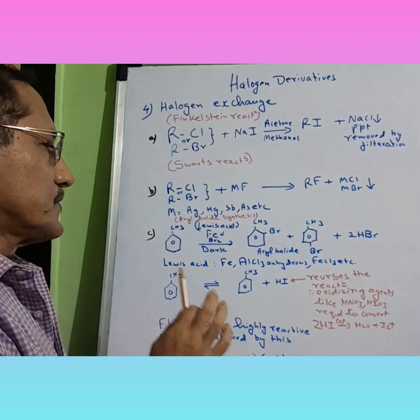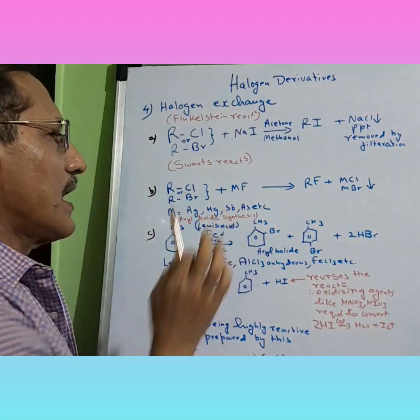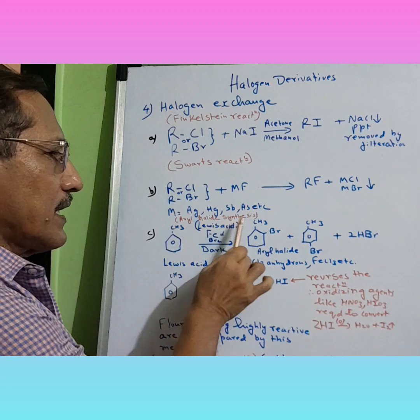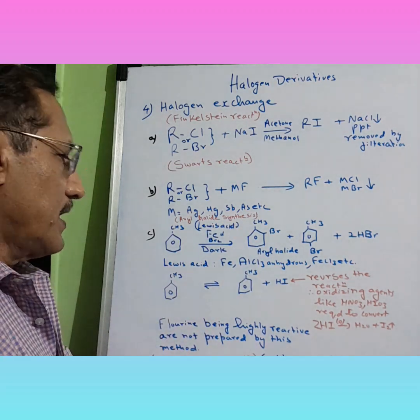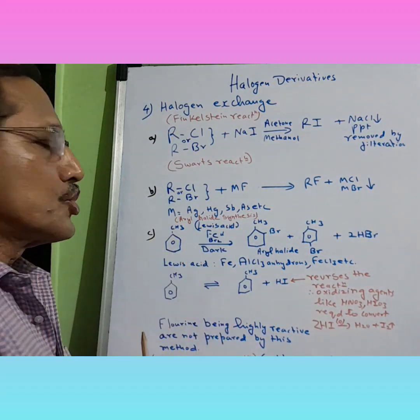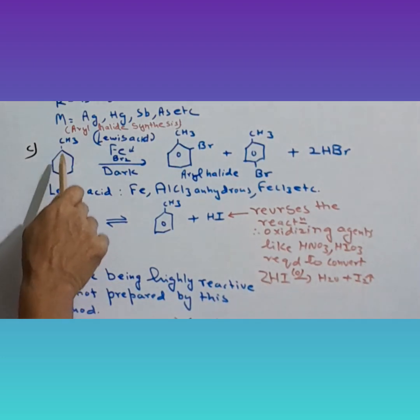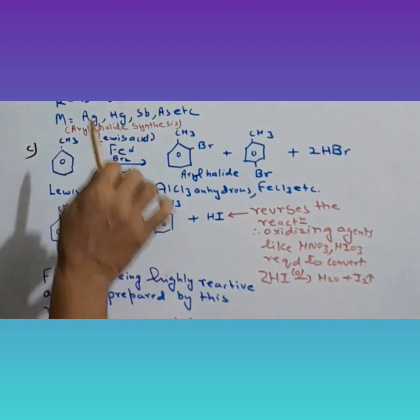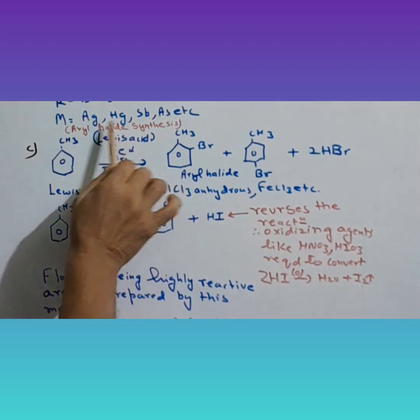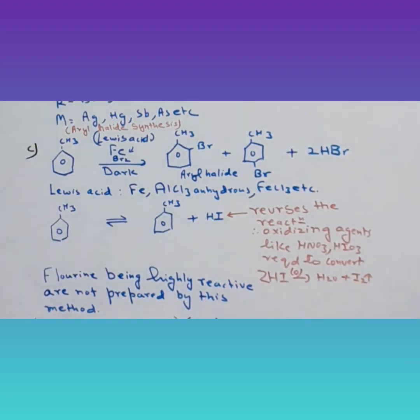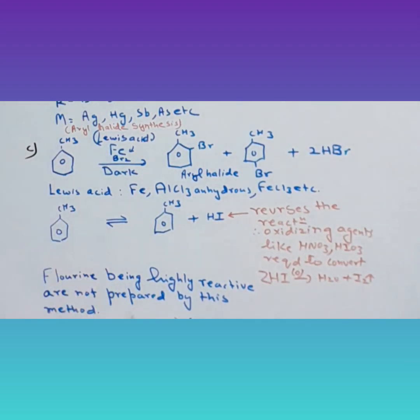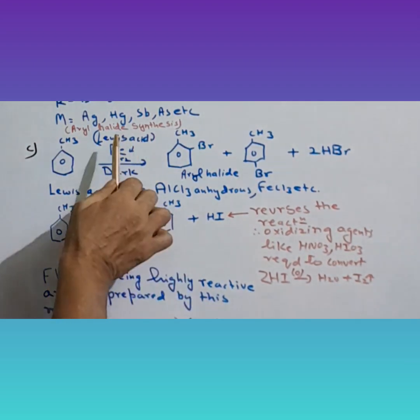Now let's get into synthesis of aryl halide. In case of aryl halide, let's start with toluene. In these types of reactions, we require Lewis acid. I already explained in my earlier video what Lewis acid is.